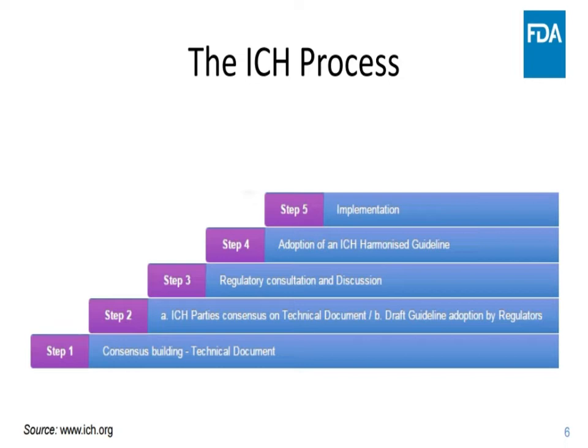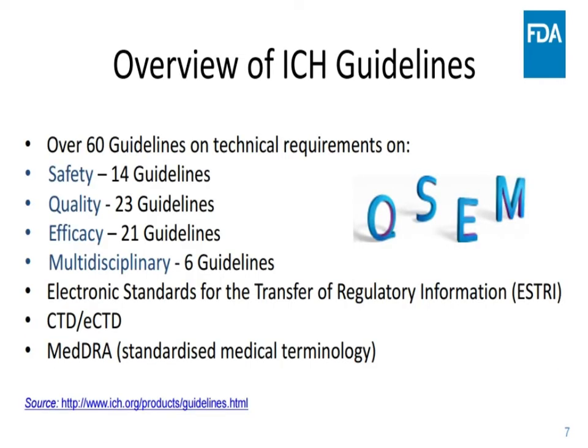Once all the parties have received the public comment, they go back for step four to finalize the document, and then you have a final ICH guideline. Step five is the implementation in each of the regions. It's important to understand the step system of the ICH process. This is a brief overview of ICH guidelines.